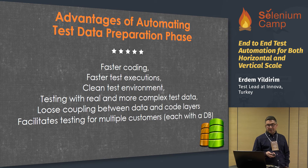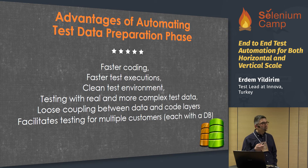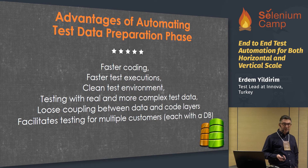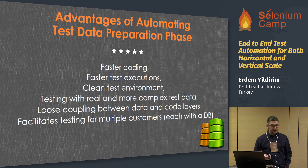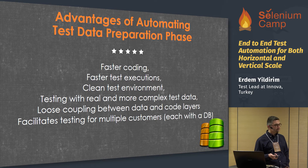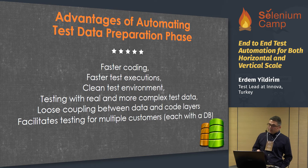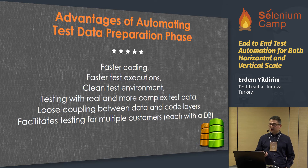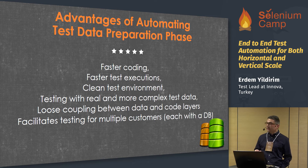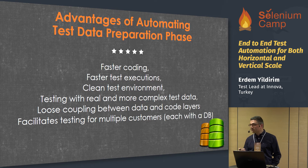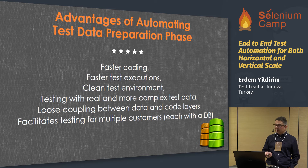Advantages of automating tests at the preparation phase include: faster coding, faster test executions, clean test environment, and testing with real and more complex test data. You decouple the data and code layers, and it facilitates testing for multiple customers. It's especially useful when the SUT is a middleware or when you have different test environments. For example, if you have five customers with different test environments and different databases, this is the best solution.